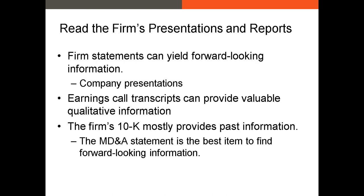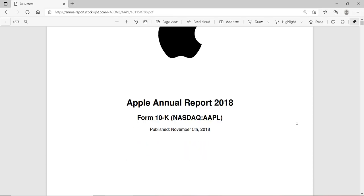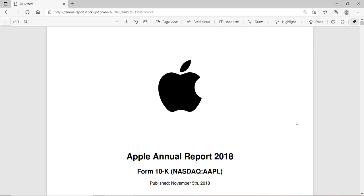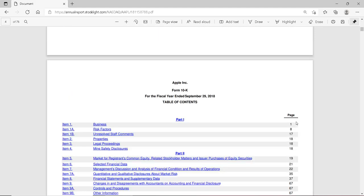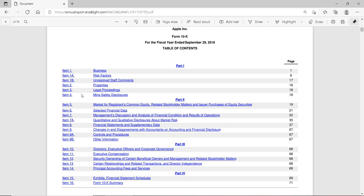There are a variety of sources you can use to collect data for an individual security. Financial statements are a great resource — they contain historical data, but sometimes, especially with the firm's 10-K or annual report, you can get a sense of current information or what might happen in the future. Here's an example of one of Apple's most recent annual reports. If I scroll down to the content section, you'll see all the standard items typically included in an annual report. If I go down to item number seven,